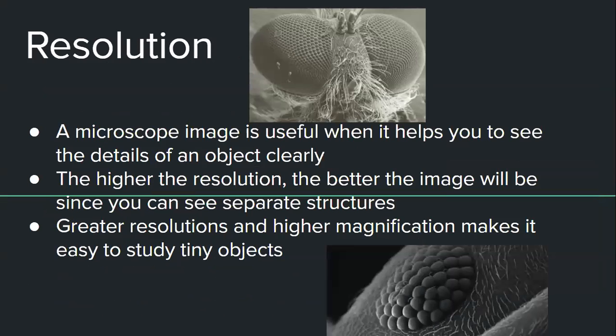All right, so resolution. So a microscope image is useful when it helps you see the detail of the objects clearly. So the higher the resolution of an image, the better you can distinguish two separate structures that are close together. For example, better resolution shows more detail. In general, for light microscopes, resolution improves as magnification increases. So electron microscopes provide images with great resolution, and higher magnification makes it relatively easy to study these tiny objects. So if you're looking at, this is a fly, this is the same fly. It is magnified a little bit more in depth, so you can see all of these tiny little eyes.